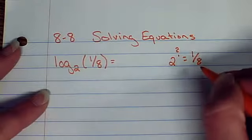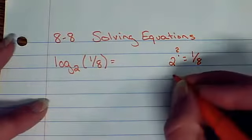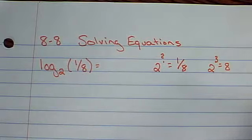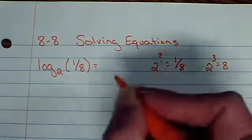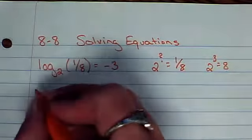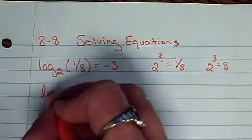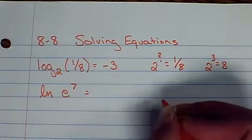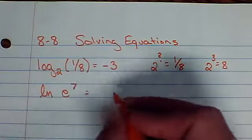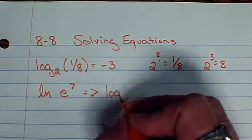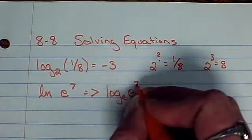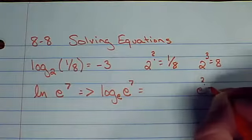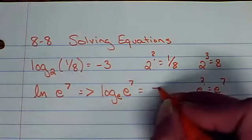Well, it's got to be a negative number if I'm going to have a fraction, because 2 cubed, reminder, 2 cubed would be 8, so 2 to the negative 3 would be 1 over 8. Alright, another review, ln of e to the 7. Now remember what ln stands for. Ln really means log base e of e to the 7th. So if you're thinking about it again, like this, e to what power gives me e to the 7th? Well, it's got to be 7.